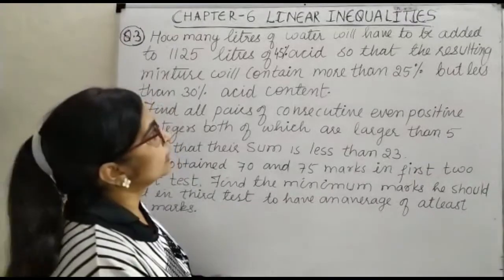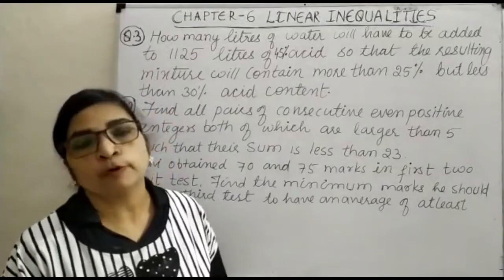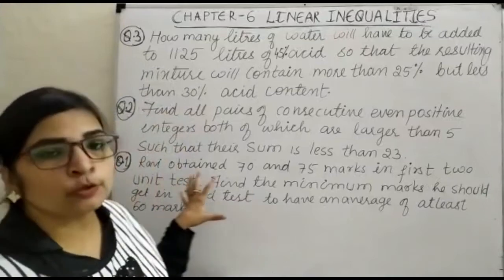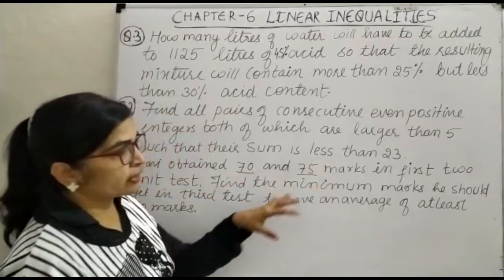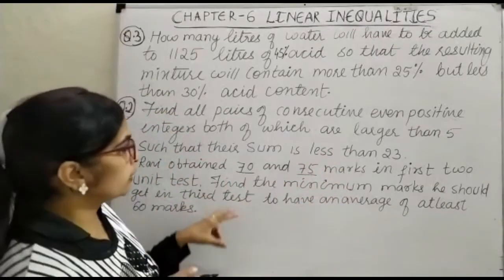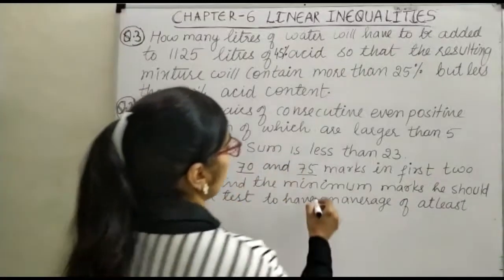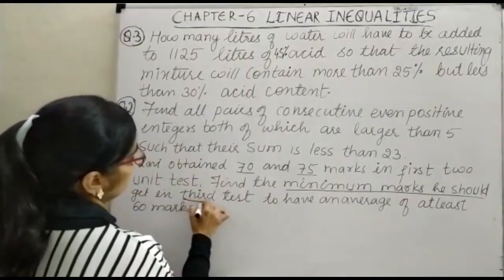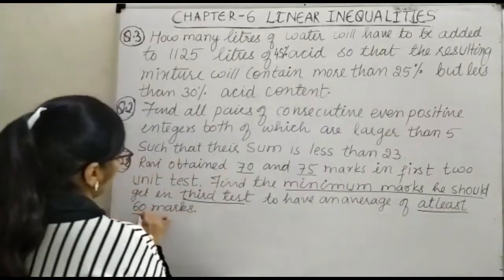Welcome to chapter 6, linear inequalities. Here we are to discuss some word problems related with linear inequality. Our first question: Ravi obtains 70 and 75 marks in the first two unit tests. Find the minimum marks he should get in the third test to have an average of at least 60 marks.